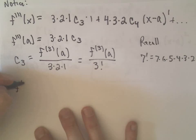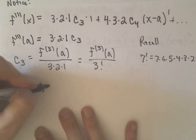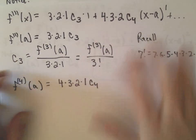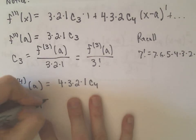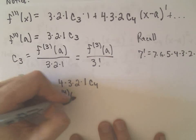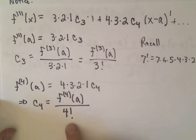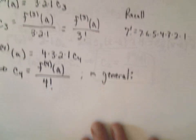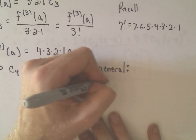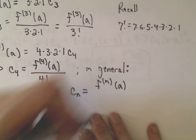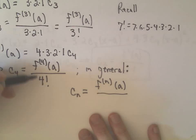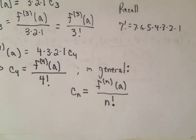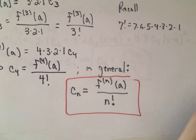Taking the fourth derivative and plugging in a, you're only left with 4 times 3 times 2 times 1 times C₄. So C₄ = f⁽⁴⁾(a) divided by 4 factorial. In general, the constant Cₙ equals the nth derivative evaluated at a, divided by n factorial. When you're at the nth derivative, you divide by n factorial — this is the key formula for figuring out our coefficients.